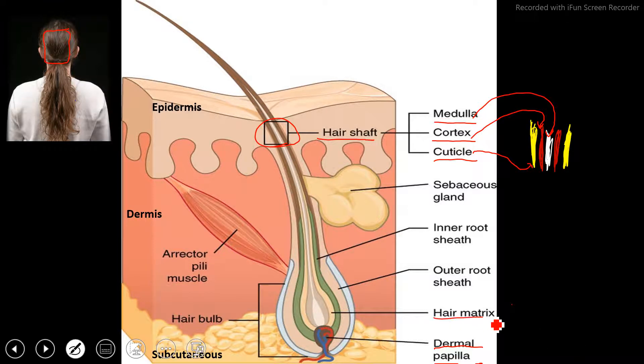Here we have the hair matrix, this kind of tan color that comes up here. Then we have the inner root sheath, which is this green part here, and then the outer root sheath, which is right here and here.